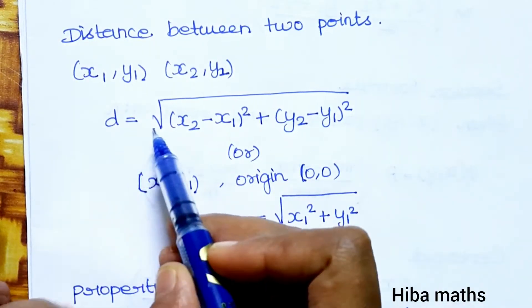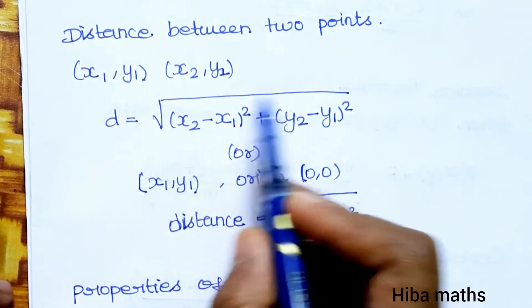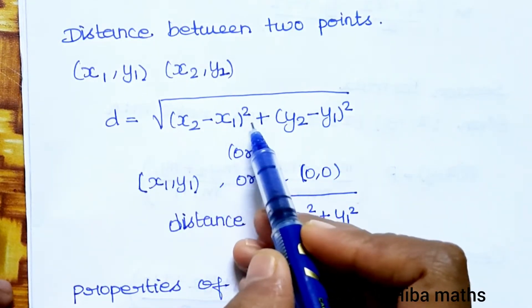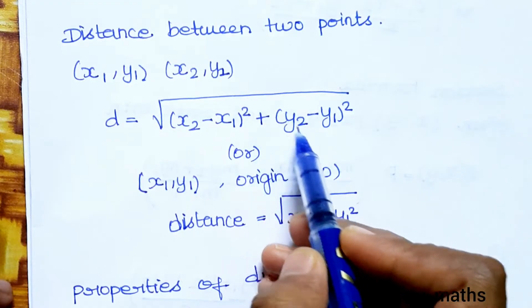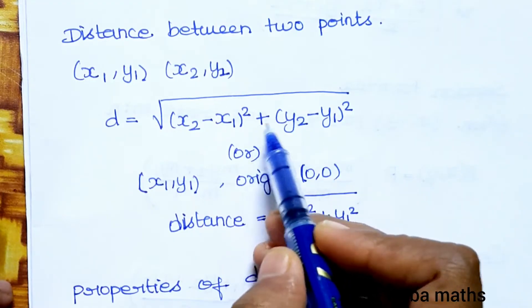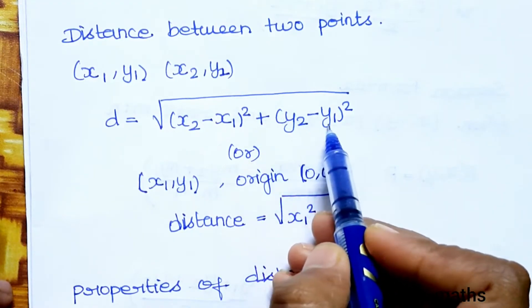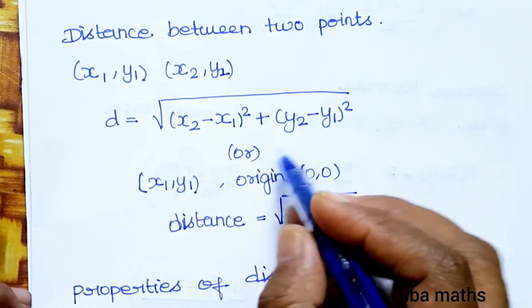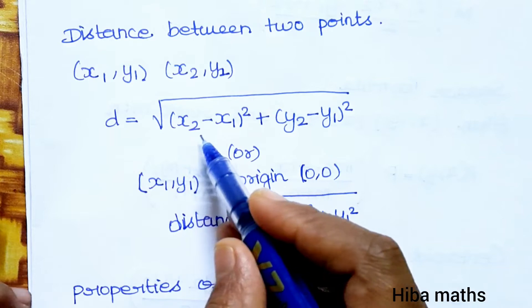So the distance formula is: d is equal to root of (x2 minus x1) whole square plus (y2 minus y1) whole square.